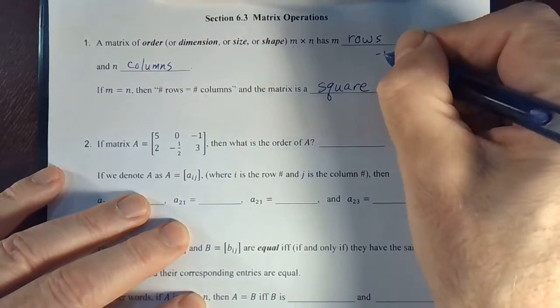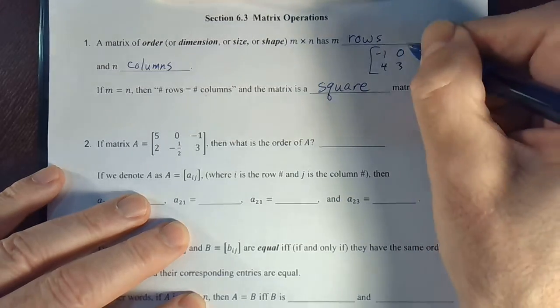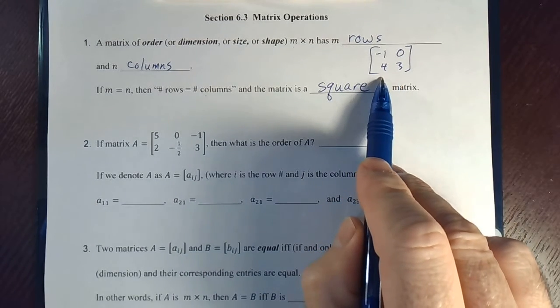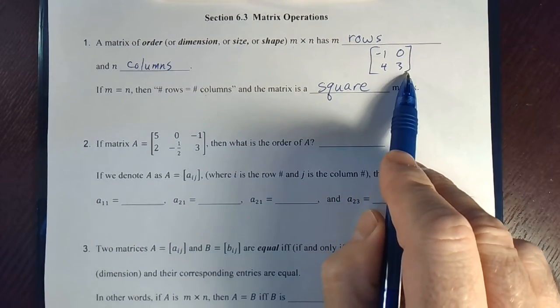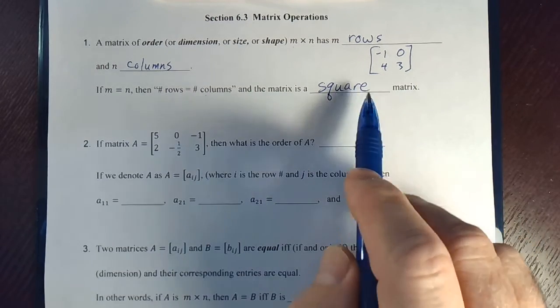Something like this: negative one, zero, four, three. This is a square matrix because it's two by two. Now you could have a three by three, or a four by four, or a hundred by a hundred. Those are all square matrices.